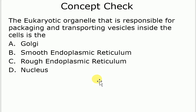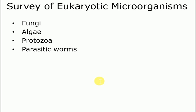The function of the Golgi apparatus is packaging and transporting. Now we will go to the specifics — the eukaryotes we need to know: fungi, algae, protozoa, and parasites. We will need to know details about each one of those. These are all eukaryotic microorganisms.